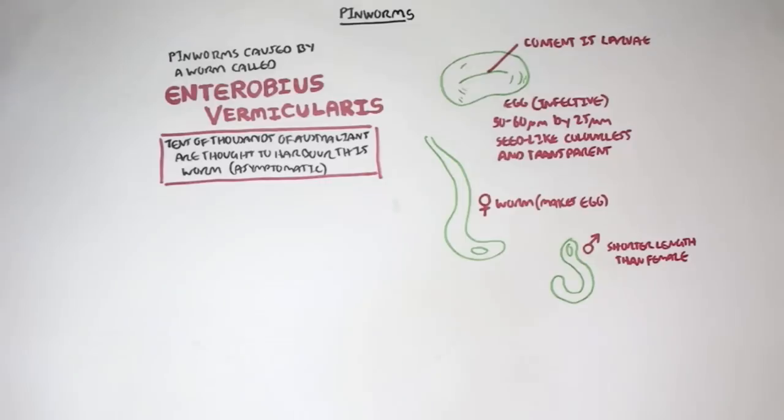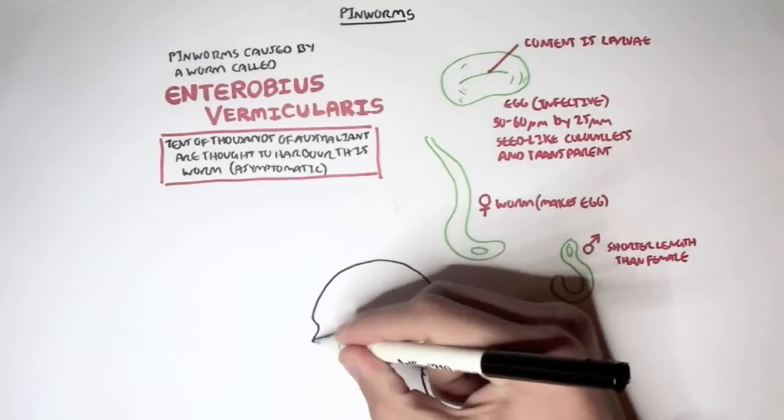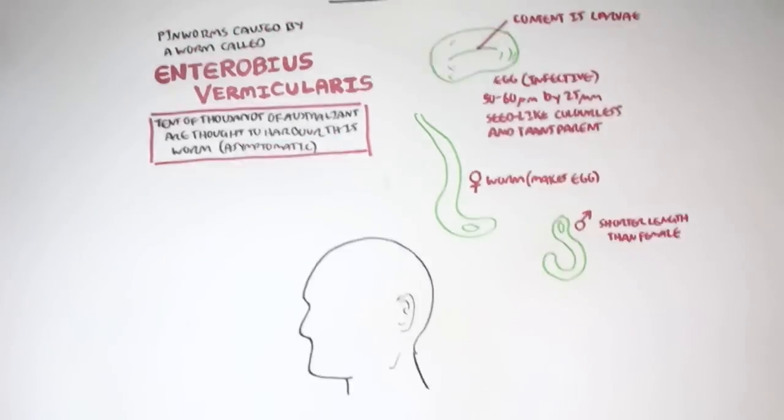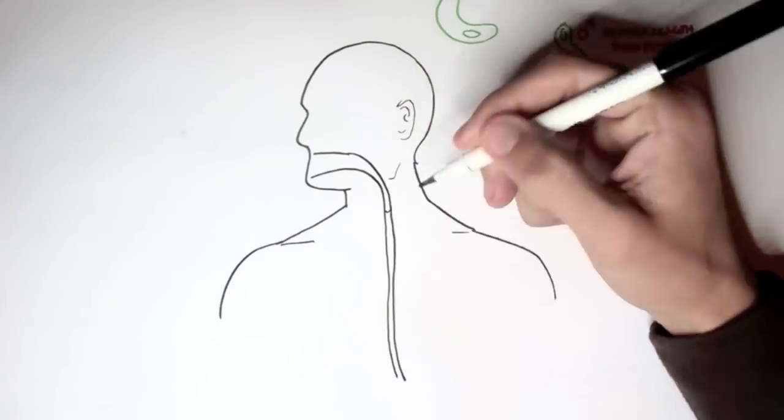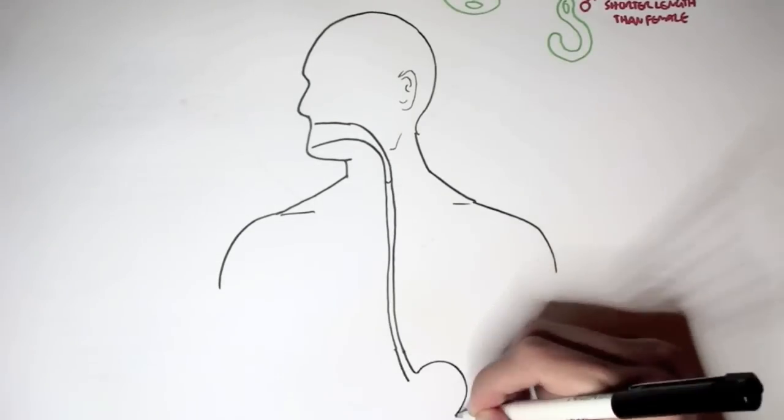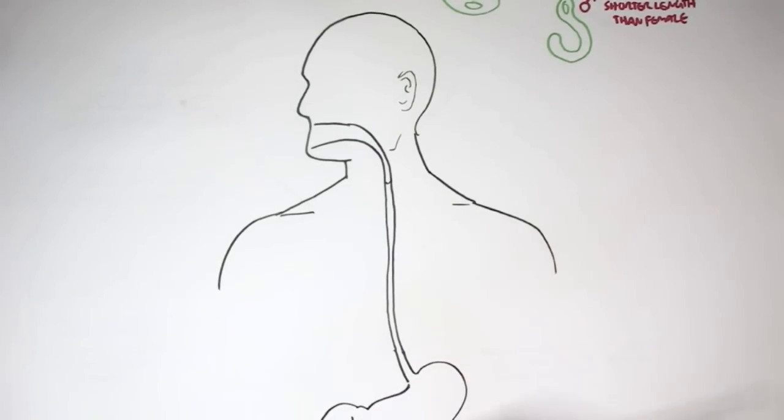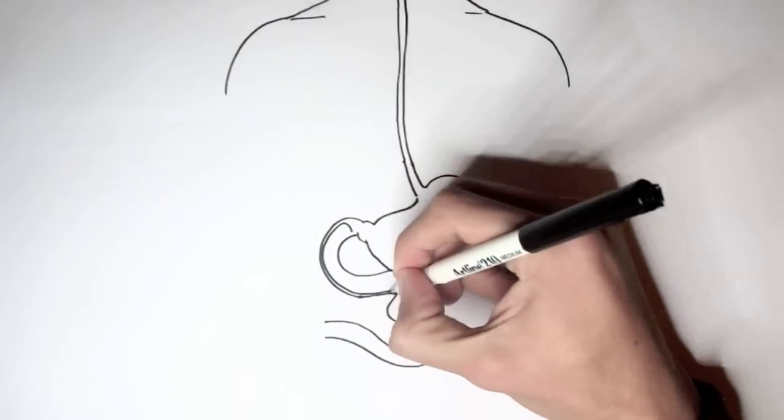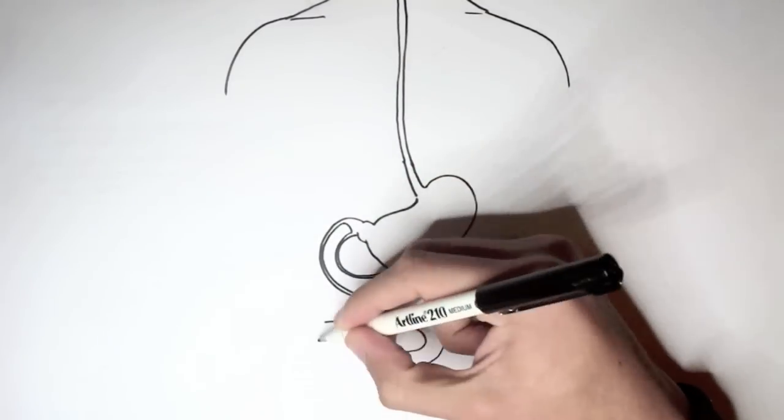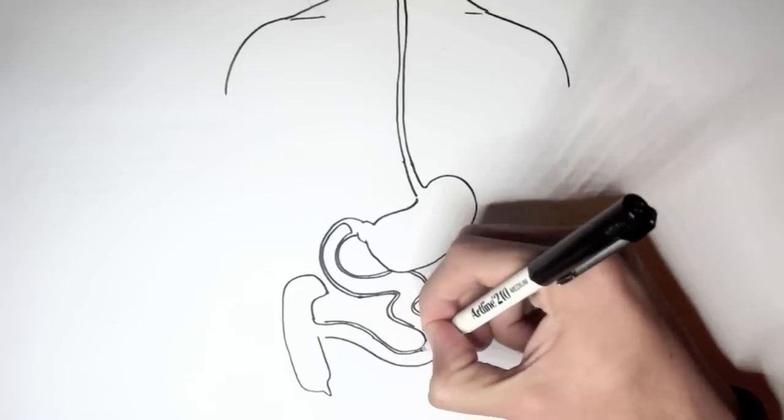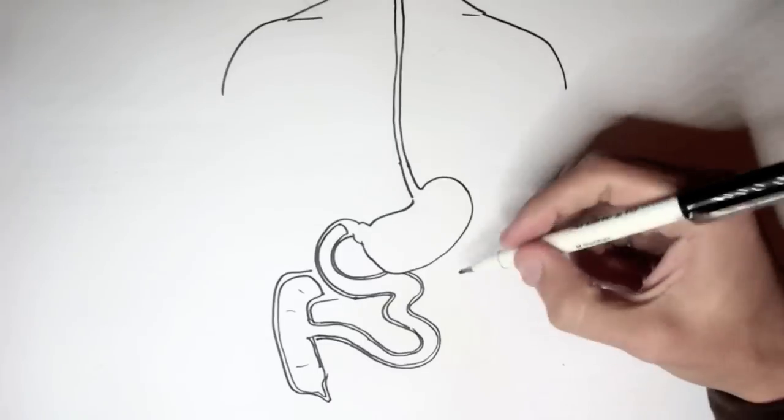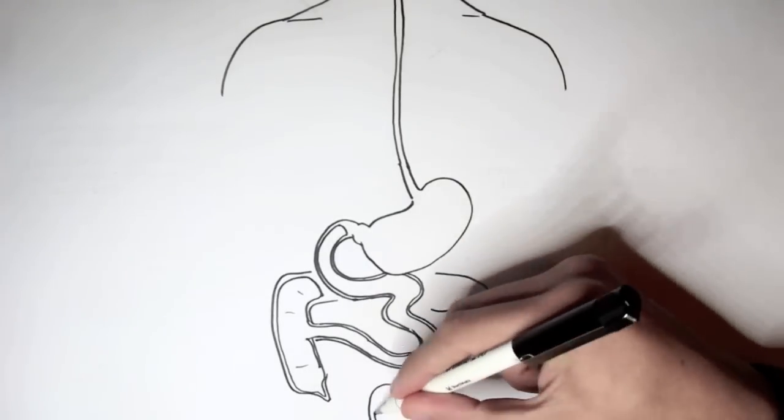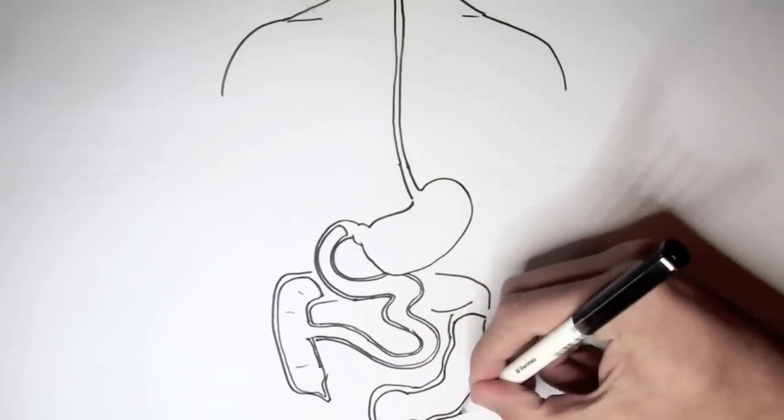So let's see how Enterobius vermicularis causes an infection, causes pinworms in a human body. It's important to know that pinworms in Enterobius vermicularis is thought to only target humans as hosts for reproduction. So here I'm drawing a human with the gastrointestinal tract because Enterobius vermicularis causes pinworms in humans starting from the digestive system.